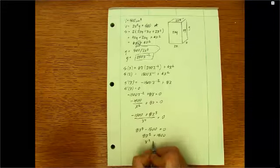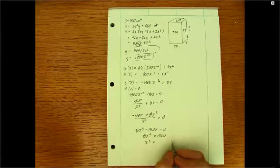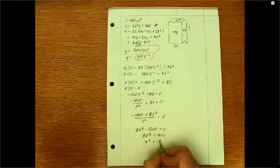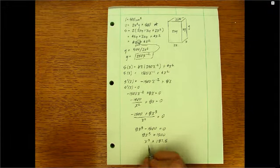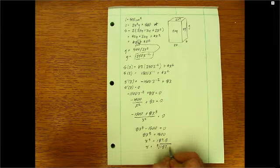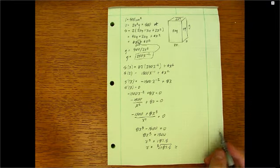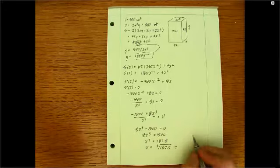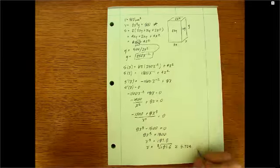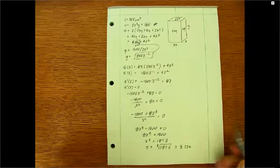So X to the third is equal to 1500 divided by 8. And when I divide 1500 by 8, what do I get? I get something in the neighborhood of 187.5. And so X has to be equal to the cube root of 187.5, which, you know, if we round that off, you get about 5.724. So 5.724 is roughly what we think X is going to be in this case.